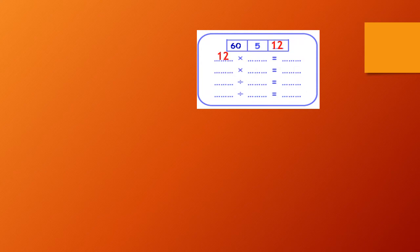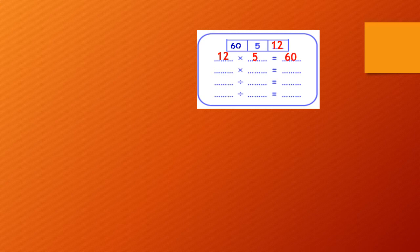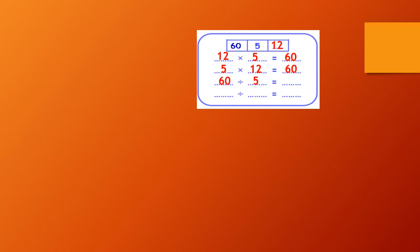12 and 5. So, 12 by 5 equals 60, 5 by 12 equals 60, 60 divide 5 equals 12, and 60 divide 12 equals 5.